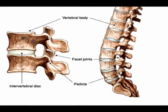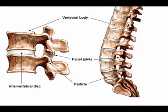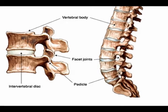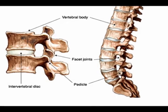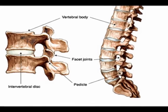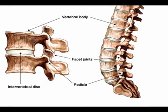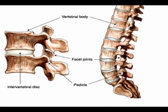The function of facet joints is to allow for flexion and extension of the spine while limiting rotation and preventing the vertebrae from slipping over each other.